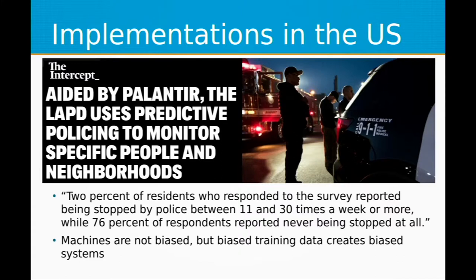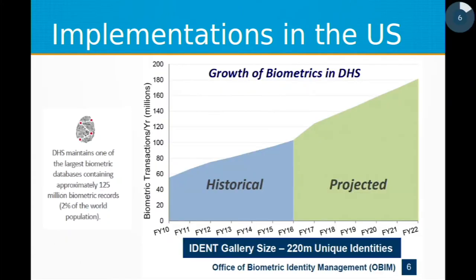While it's completely proprietary and we can't really say what it does, there has been research done to suggest that 2% of residents who responded to the survey reported being stopped by police between 11 and 30 times a week or more, while 76% reported never being stopped at all. So a very small percentage of people are being stopped very frequently because of these machine learning algorithms, which are trained on potentially biased data. Machines aren't biased, but biased training data being applied to real world situations can be very dangerous. Currently the DHS has a biometric database containing around 125 million biometric records — 2% of the world's population — and expects substantial growth in that database.